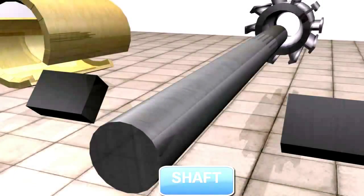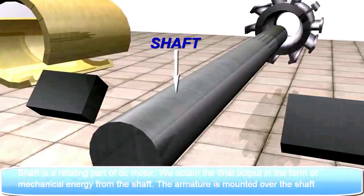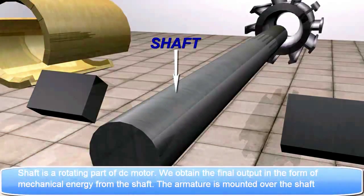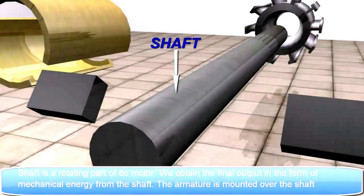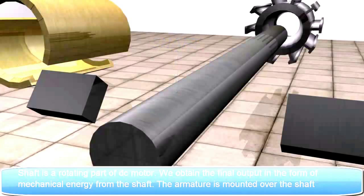Shaft. Shaft is a rotating part of DC motor. We obtain the final output in the form of mechanical energy from the shaft. The armature is mounted over the shaft.